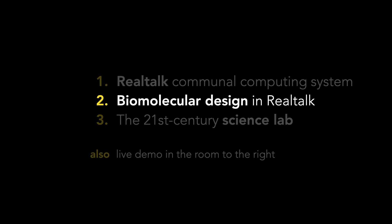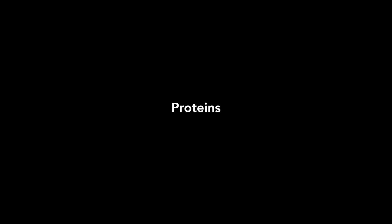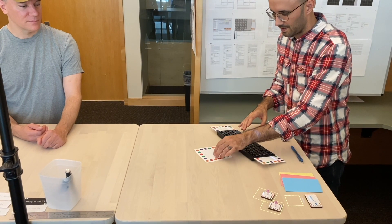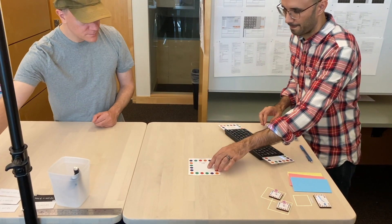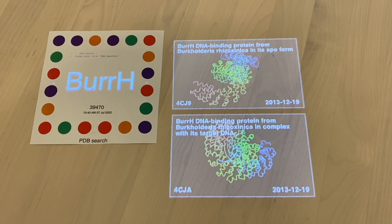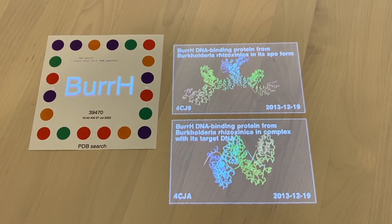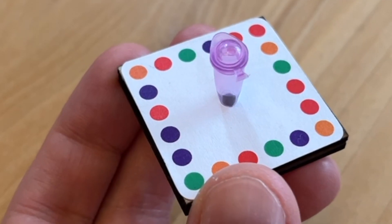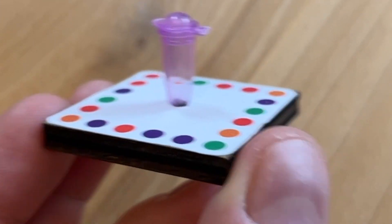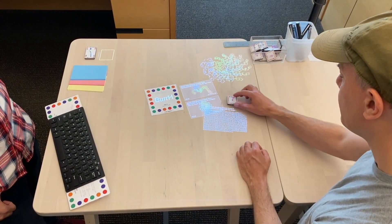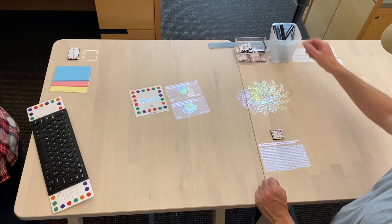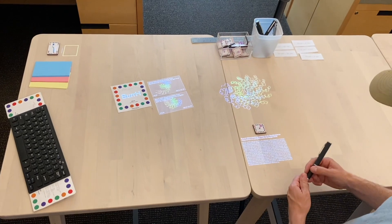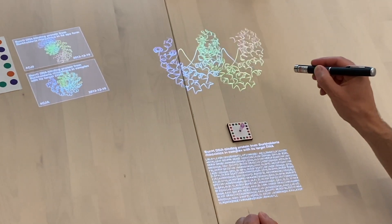Last year we did some initial prototyping, and I'm going to show some clips based on a series of tasks from a real project in Sean's lab. Here Sean is typing the name of a protein into a search card, and it's going to bring up results from the protein databank. I'm going to grab the one that we want using a mock test tube — it's kind of like a game piece in a board game. So I pick up that protein and now it's just sitting out on the table where we both can see it, play with it, and talk about it. I'm using this laser pointer to spin the protein around and take a look at it.